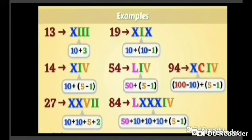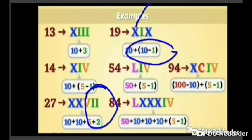For 27, we can write 20 plus 7. And 20 is written as X and X, 10 plus 10. For 7, I can break down into 5 plus 2. 5 means V and 2 means 2 times I. Now, taking 19, 19 is nothing but 10 plus 9. Now 10 represents X. And 9 represents 10 minus 1. 10 minus 1 is nothing but IX.